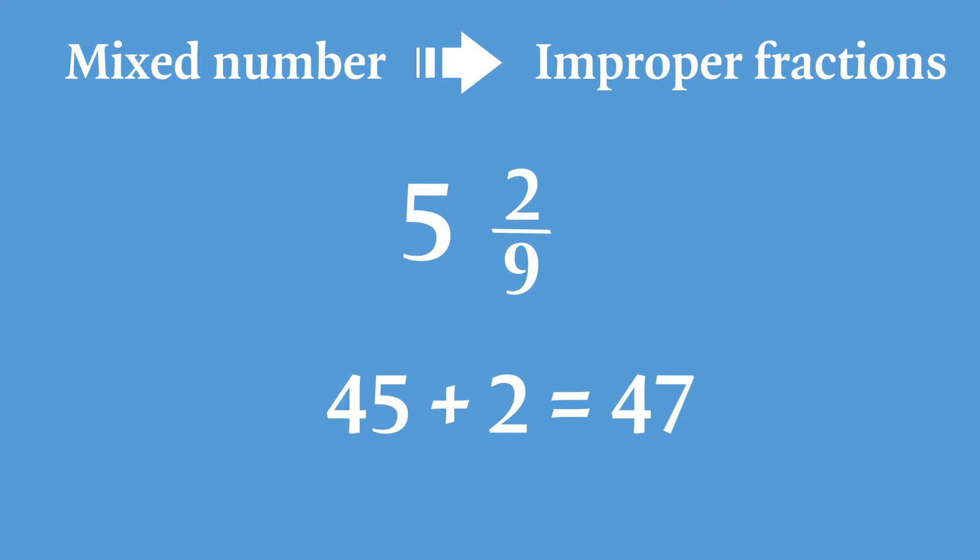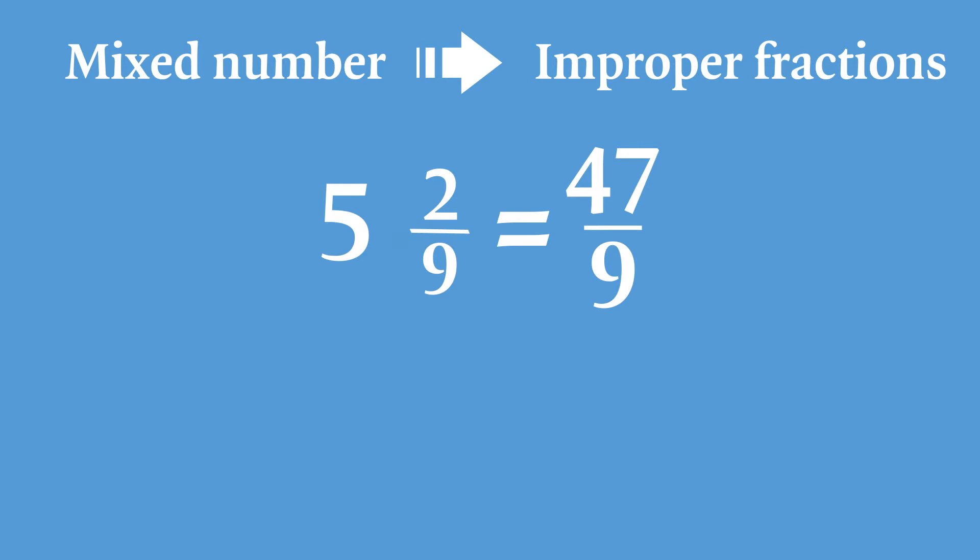So the mixed number, 5 and 2 ninths, is 47 over 9 as an improper fraction. So what is the importance of fractions?